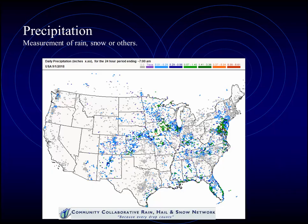Some of the finest precipitation maps are produced by CoCoRaHS, the Community Collaborative Rain, Hail, and Snow Network. This is a collection of reports from over 15,000 participants around the country.